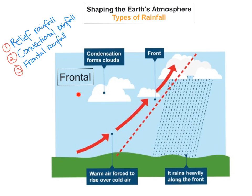The last one is frontal rainfall, and frontal rainfall gets its name from 'front.' We looked at fronts in previous videos — a front is when two air masses meet each other. This line here is the front. What is happening is two air masses meet: you've got the warm air here and the cold air here, so this area is the front. Because warm air and cold air don't mix well, the lighter air, which is the warmer air, is forced to rise up. As it rises up, it cools, condenses, and the water vapour turns to water droplets. These collate, and what you'll get is some clouds and some rain.